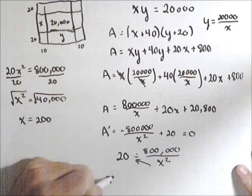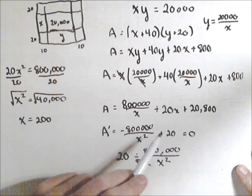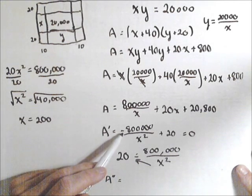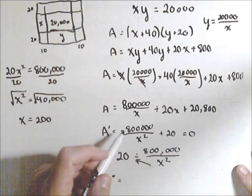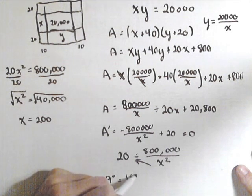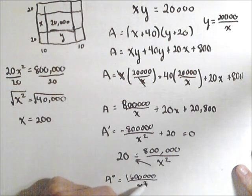So if I find my A double prime, this constant's going to go away. The derivative of this, I pull the negative 2 down. And I've got, then, 1,600,000 over x cubed.